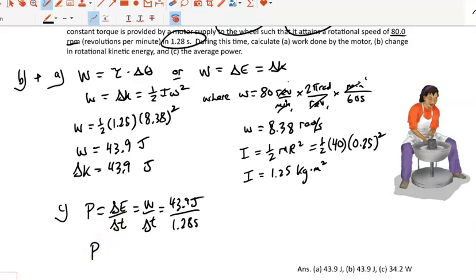So that power, let me pull my calculator, is 34.3 joules per second. Or 34.3 watts. That's it for this example.